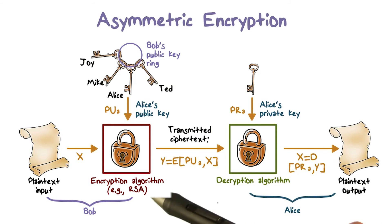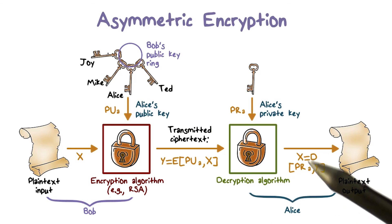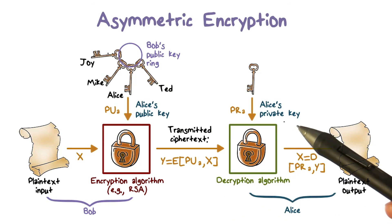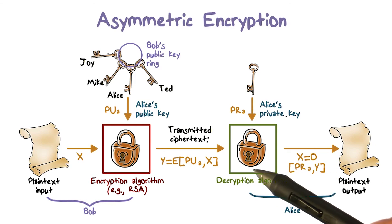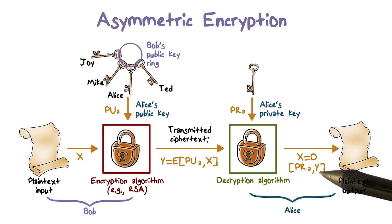That is, if a public key is used to encrypt a plaintext into ciphertext, only the companion corresponding private key can decrypt the ciphertext properly into plaintext. Therefore, in this case, only Alice can see the plaintext.